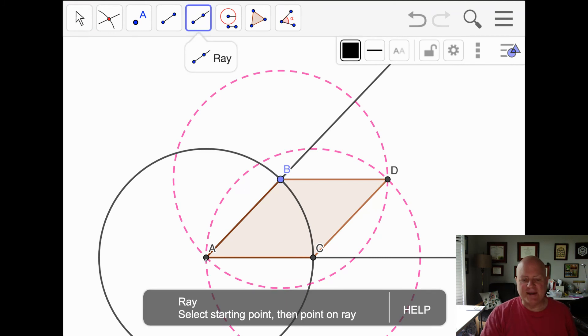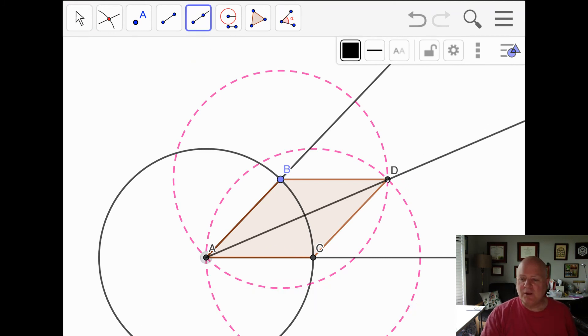We'll draw ray AD. And what can you say about these two triangles, ABD and ACD? Notice they have two sides that are the same for both triangles. And this one side, AD, is a common side. It's the same for both of them.